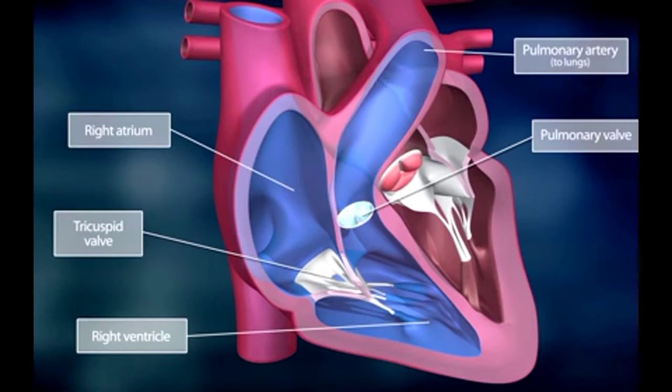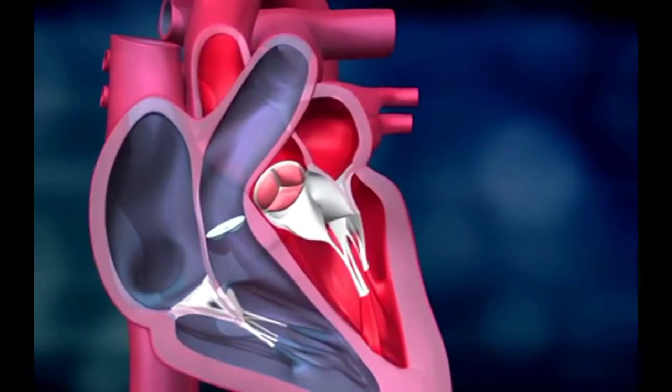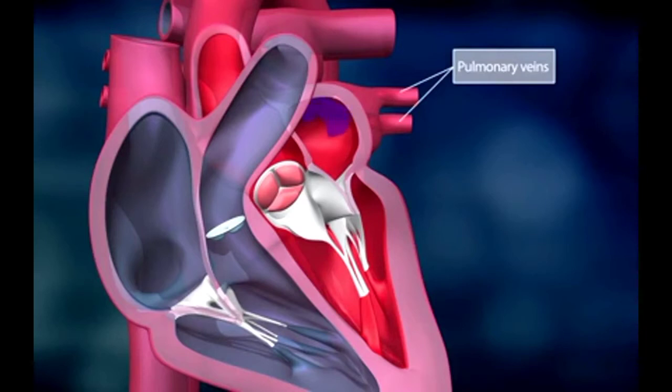After this, the pulmonary valve closes quickly, preventing the back flow of blood into the ventricle.